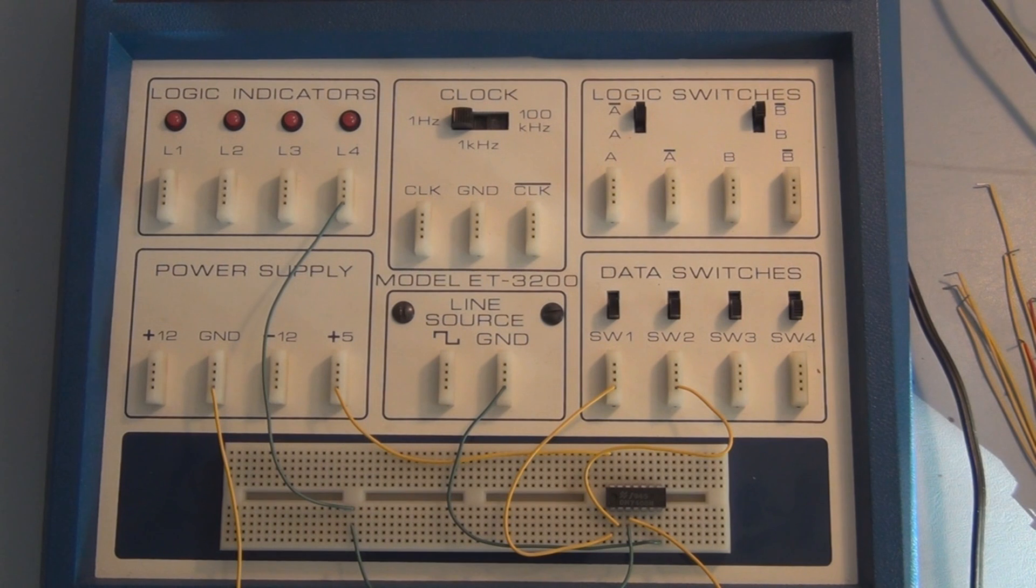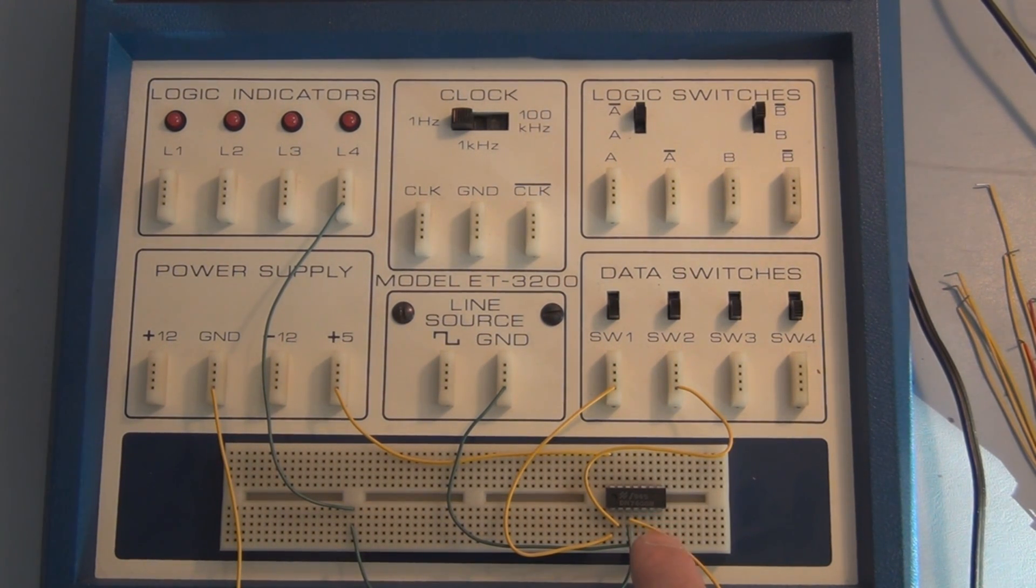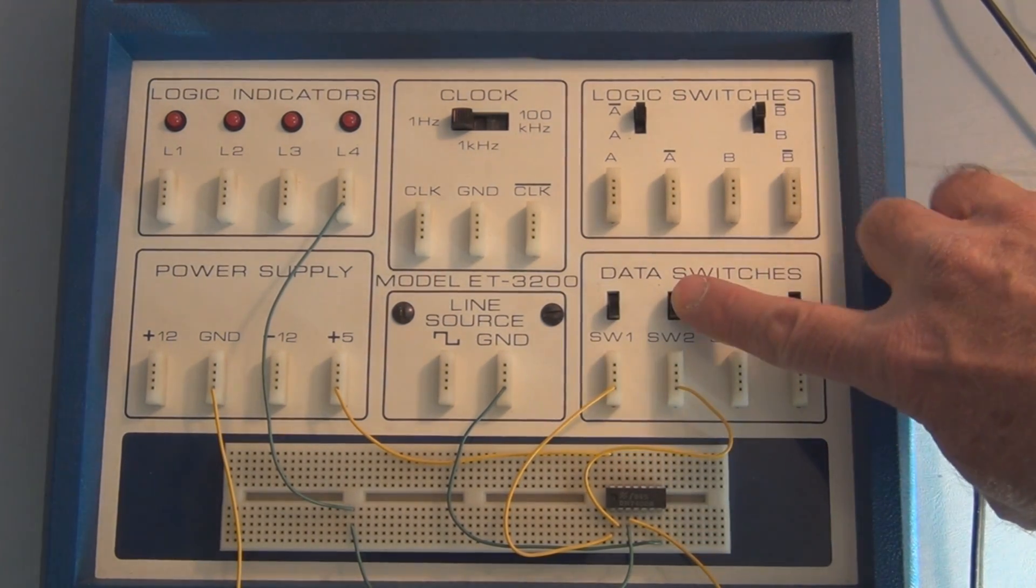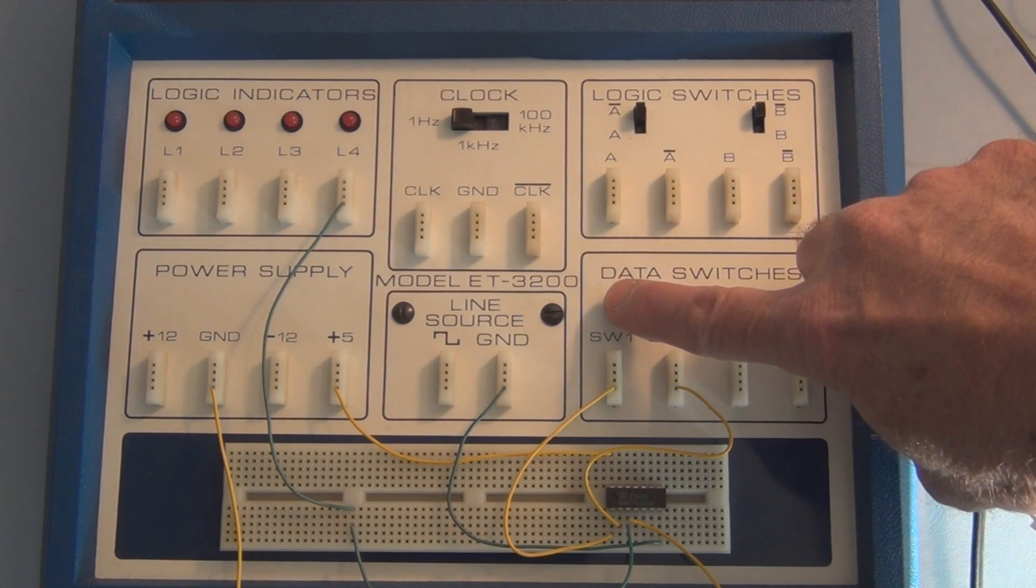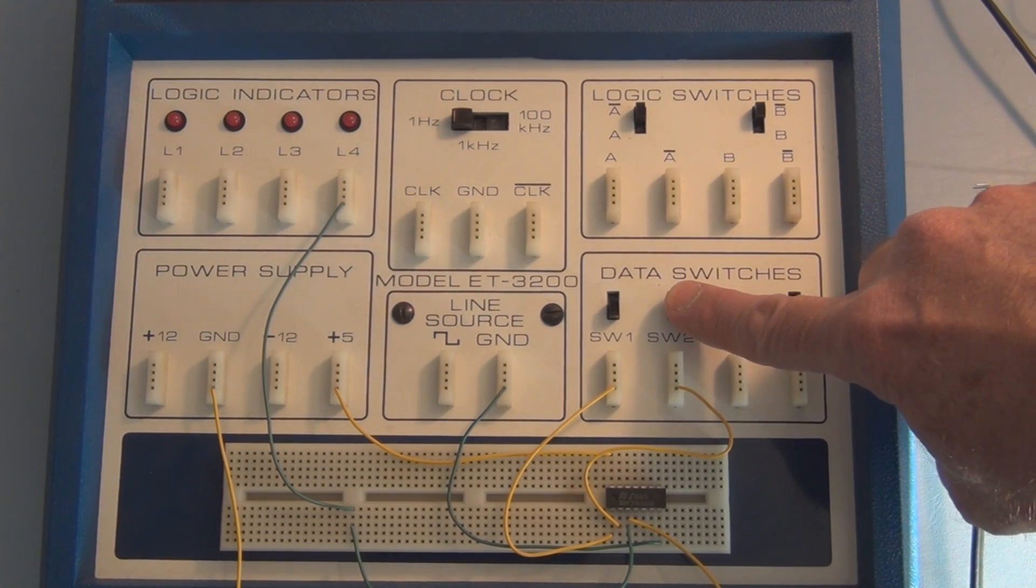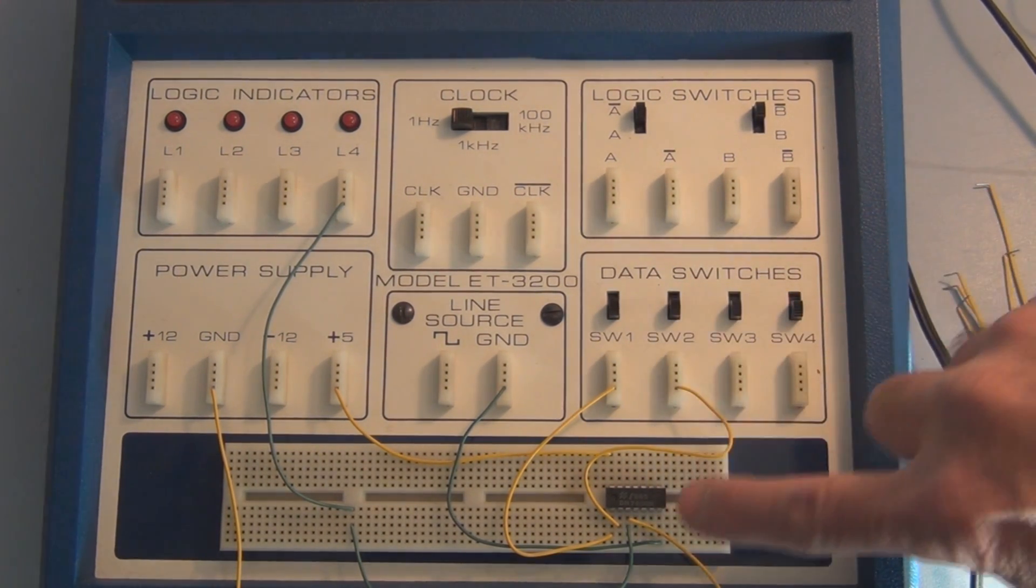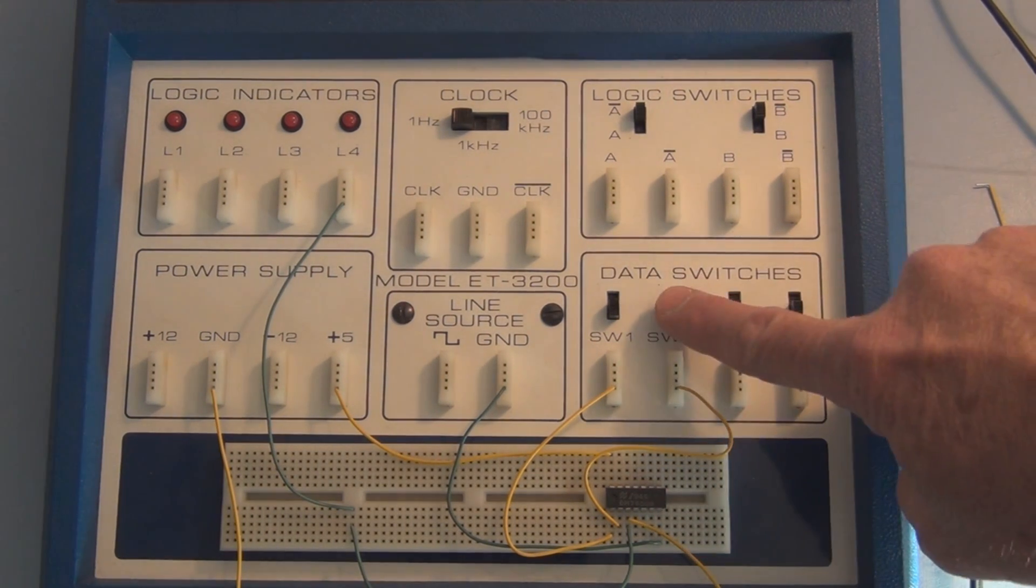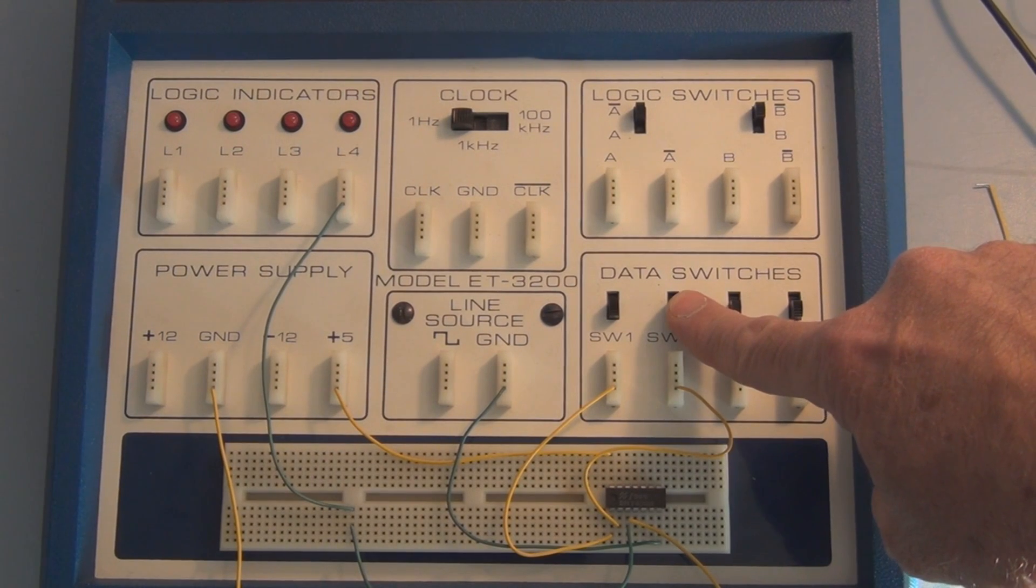So I have the ground and the power hooked up to this IC chip, and I'm utilizing the first gate. Pin 1 and 2 are the inputs, and pin 3 is the output. Now I'm using these data switches, which allow me to apply all possible combinations of inputs to pins 1 and 2. So right now I have two zeros applied to the input.